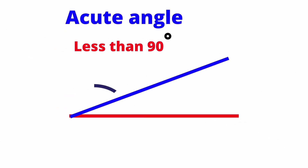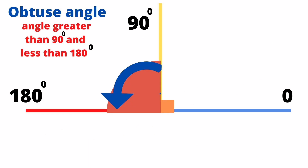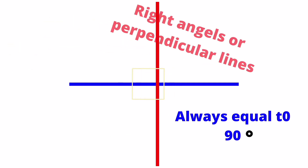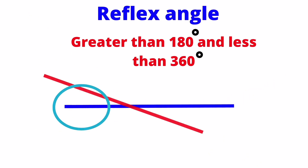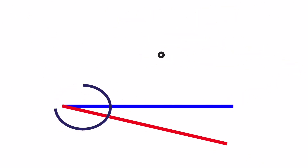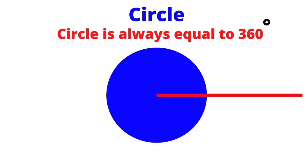Acute angle: less than 90 degrees. Obtuse angle: greater than 90 degrees and less than 180 degrees. Right angles, or perpendicular lines, are always equal to 90 degrees. Reflex angles: greater than 180 degrees and less than 360 degrees.